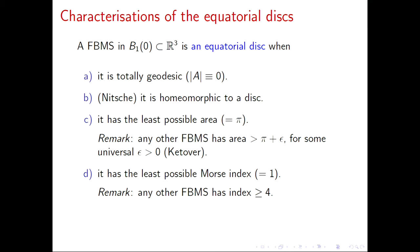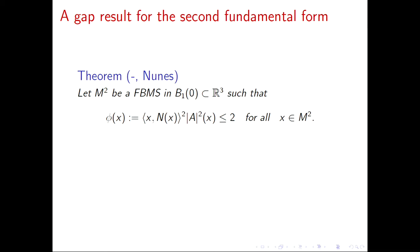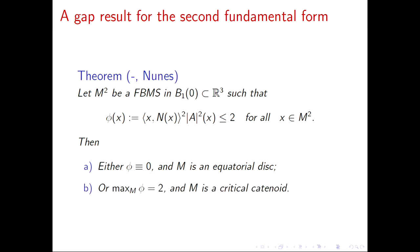What I did with Ivaldo Nunes from the Federal University of Maranhão was to seek a new extrinsic characterization. Assume we have a compact, properly embedded free boundary minimal surface in the ball, and that the function associating to each point the second fundamental form at that point multiplied by the normal component of the position vector is bounded by two. Then we have two possibilities: either this function is identically zero — in which case you have the equatorial disk — or the maximum of this function is two, and you see the critical catenoid. Notice that we are not making any topological assumption.